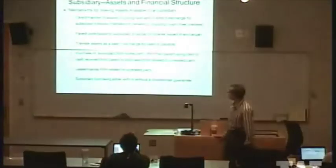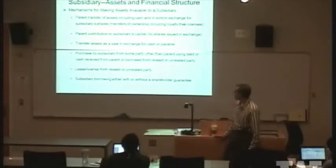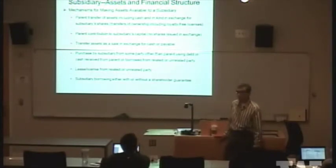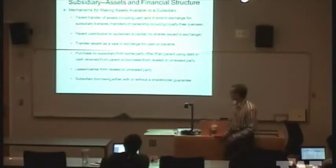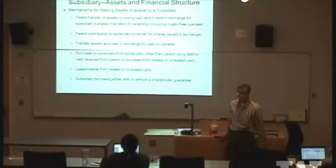The fourth bullet point: assets purchased by the subsidiary from some party other than the parent, using debt or cash received from the parent or borrowed from unrelated or related lenders. Clearly a subsidiary can obtain use of assets through that fashion.